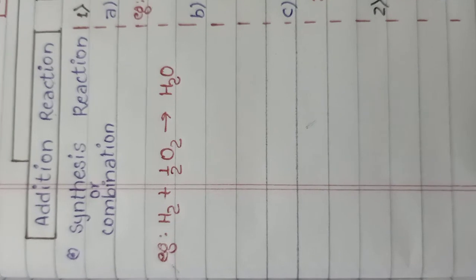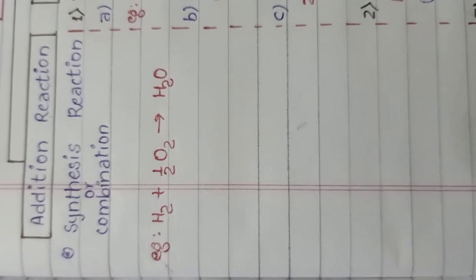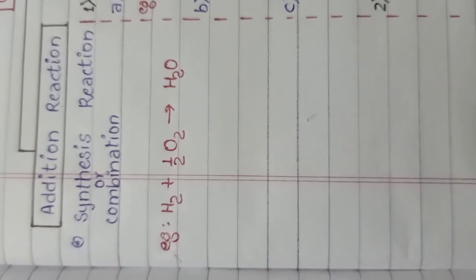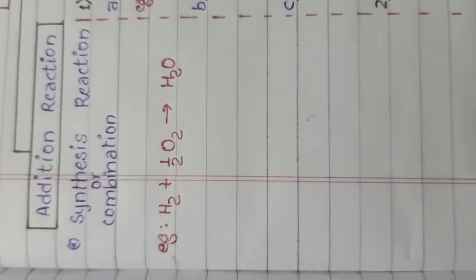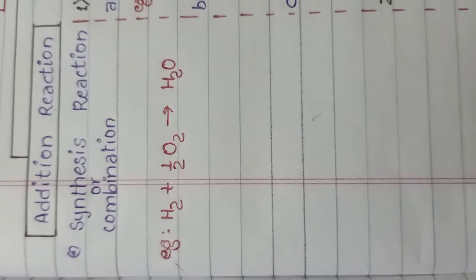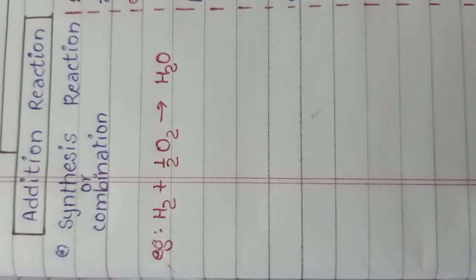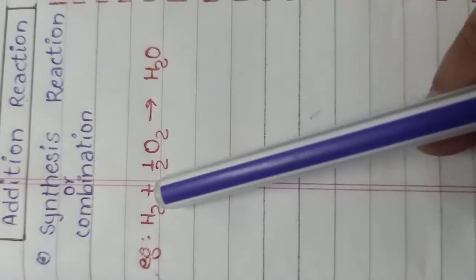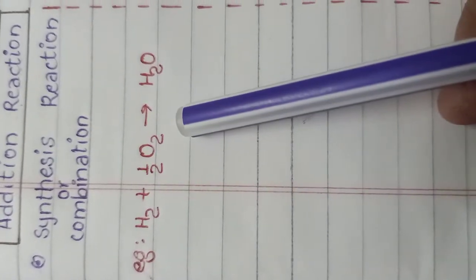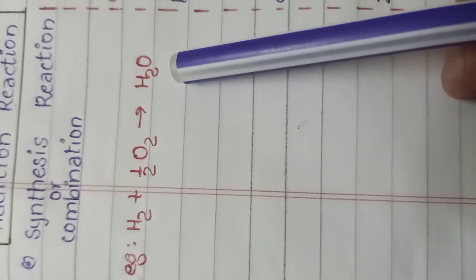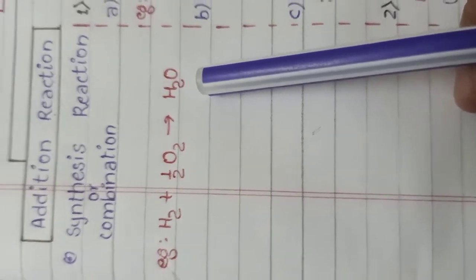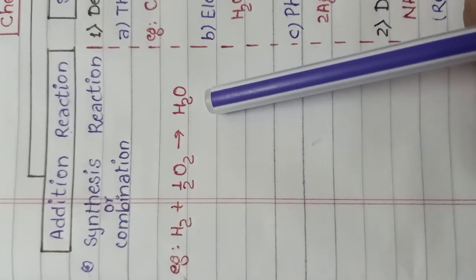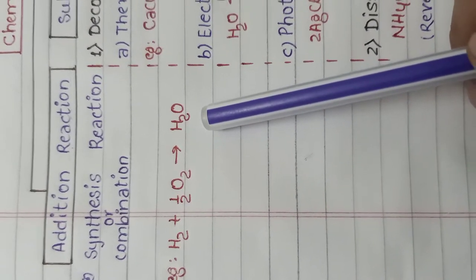When two or more substances combine to form a new single substance, this type of reaction is called addition reaction. For example, when hydrogen gas combines with oxygen gas to form water, this is an example of addition reaction.